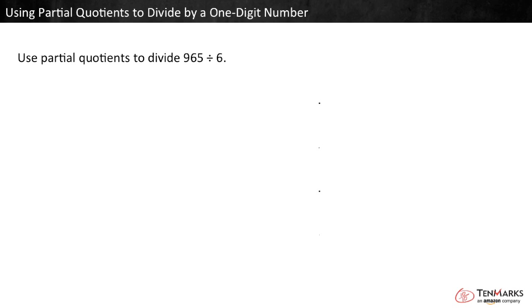Use partial quotients to divide 965 by 6. First, set up the division problem this way.